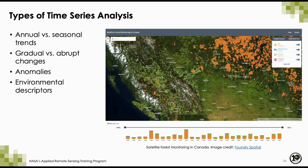There are many different types of time series analysis you can do with satellite Earth observations, including annual and seasonal trends, both gradual and abrupt changes, anomalies, and environmental descriptors. I'll be describing each of these in more detail next.